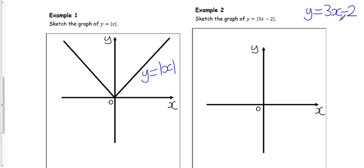Where would it cross the y-axis? Well, when x is 0, y would be 3 times 0 take 2, so y would be minus 2. So this would cross the y-axis at minus 2.